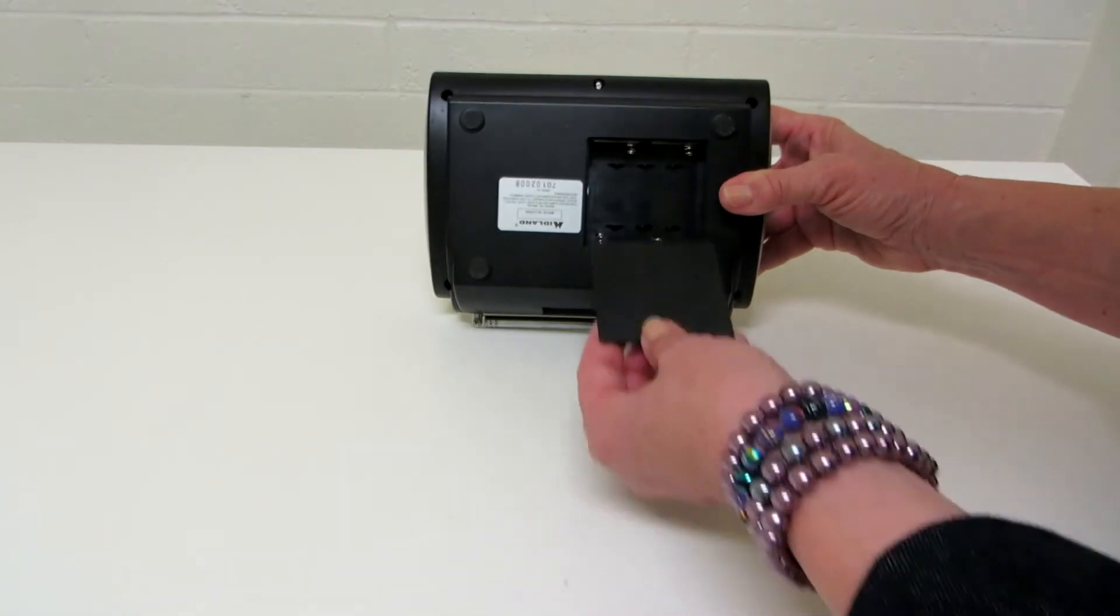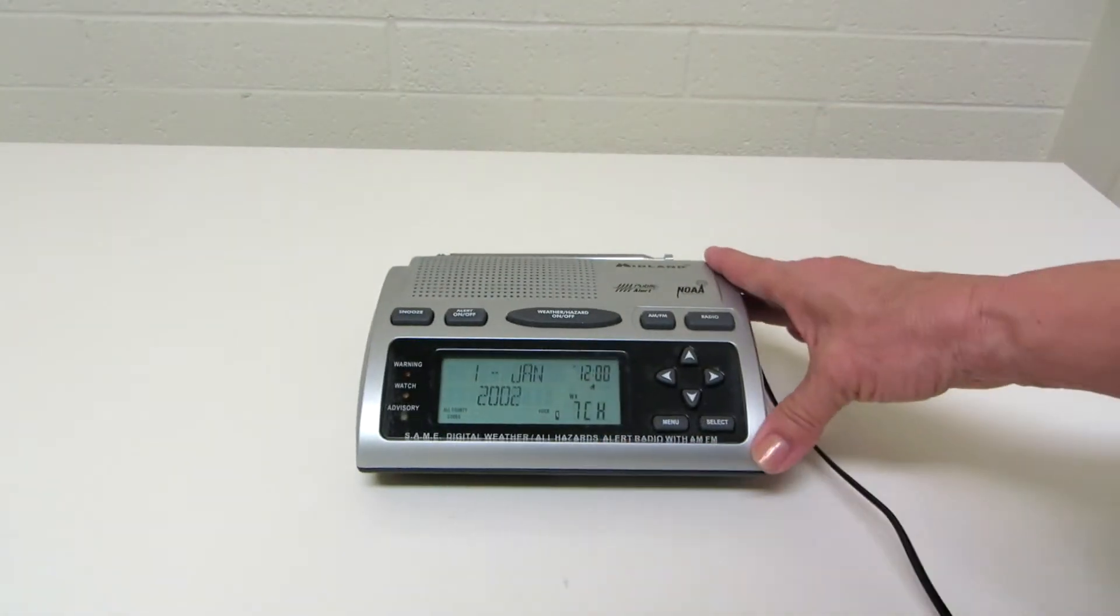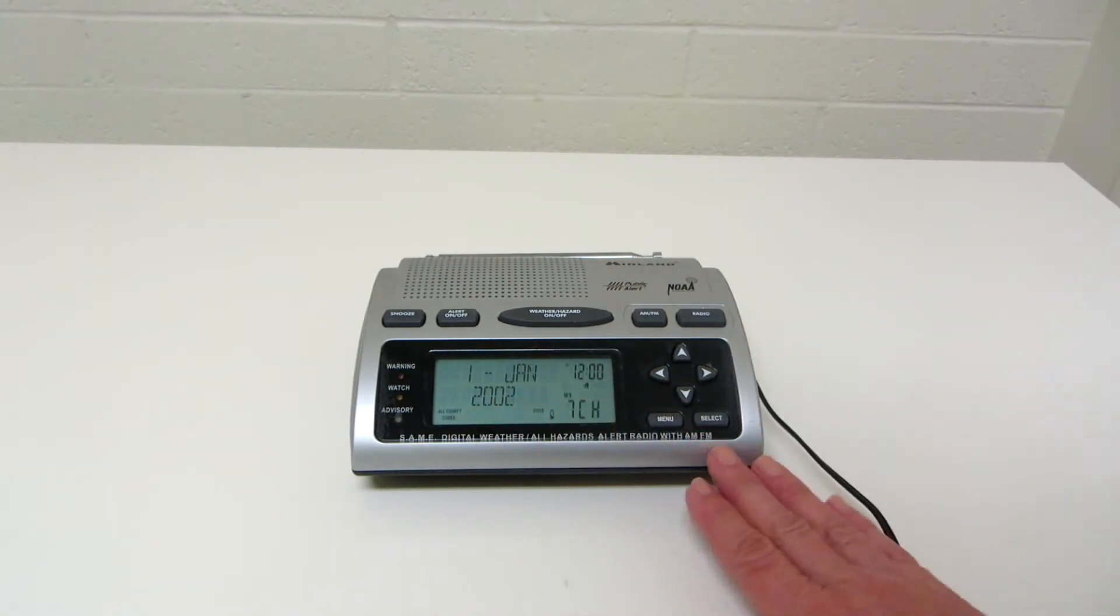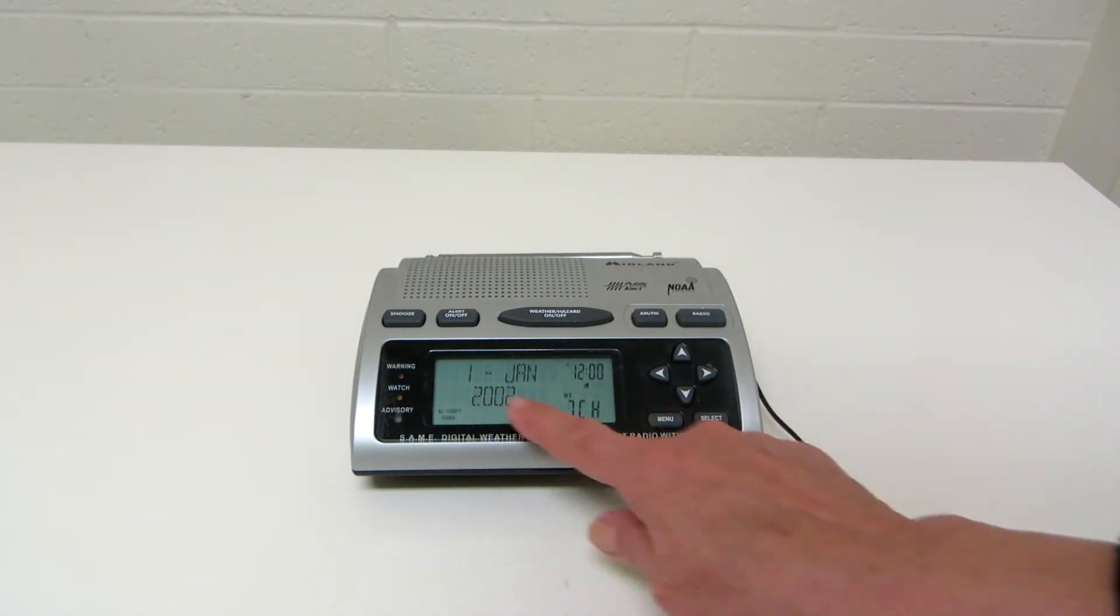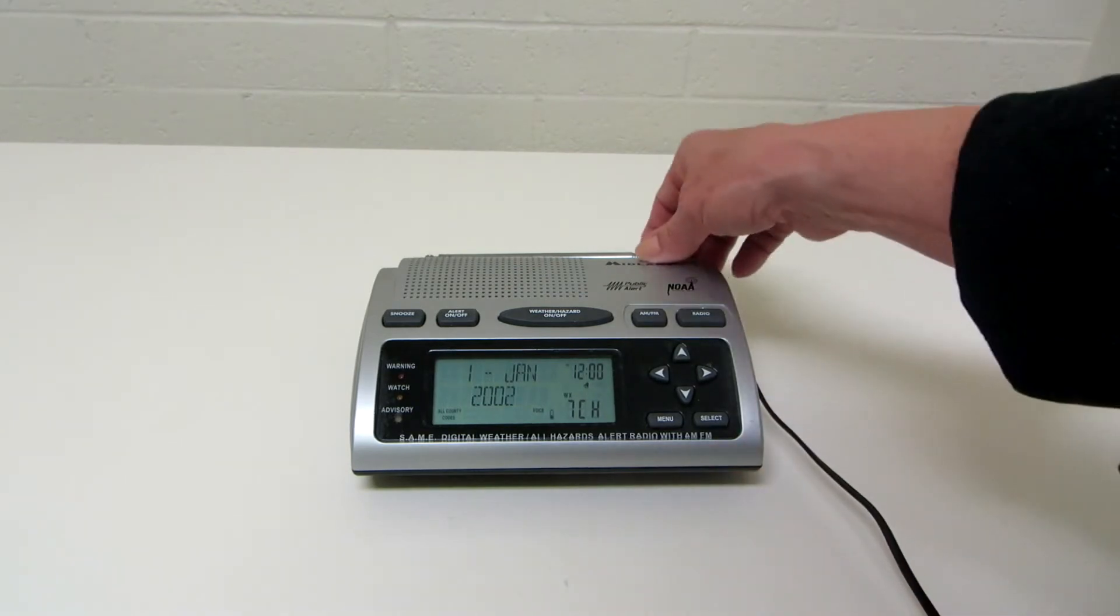Install four double-A batteries. If you unplug it without the battery backup, you lose your settings. It'll still work when you plug it in again, but you have to redo the settings. In a power outage situation, you want to make sure that your alarm is still working, so be sure you put those in there.